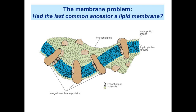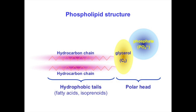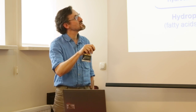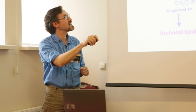Regarding membranes: all contemporary cells are surrounded by lipid membranes, and in all species these are made of phospholipids. All phospholipids share the same structure — they are amphiphilic molecules with a hydrophobic part composed of two lateral hydrocarbon chains (fatty acids or isoprenoids) and a polar head composed of glycerol bound to a phosphate group. However, the enzyme responsible for synthesizing glycerol phosphate in archaea is very different from the enzymes performing the same reaction in bacteria and eukaryotes.